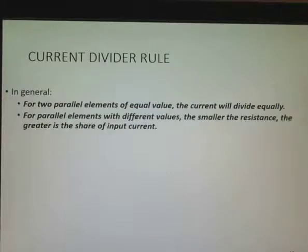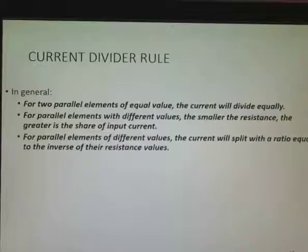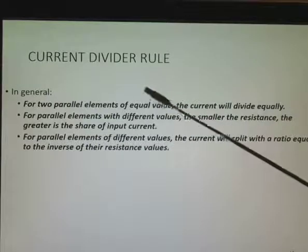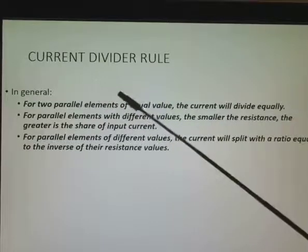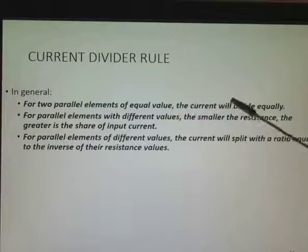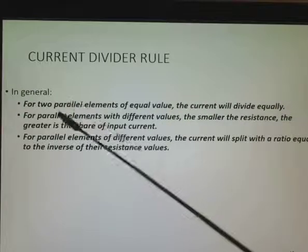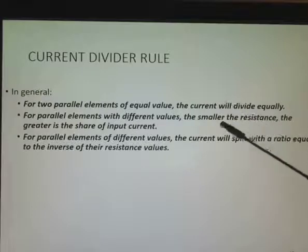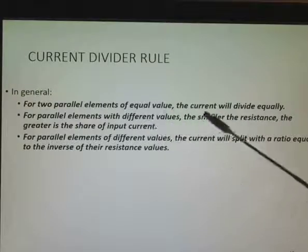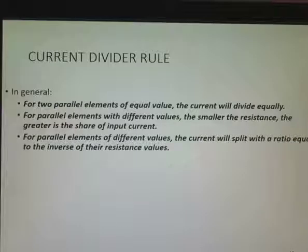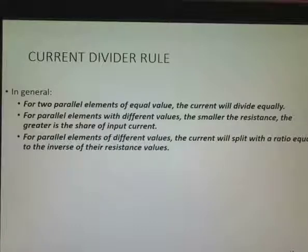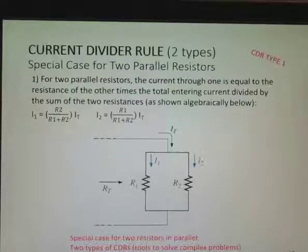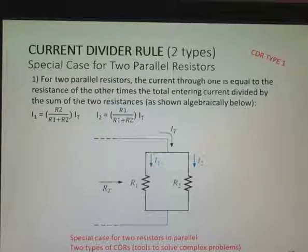Now we're going to look at the current divider rule. For two parallel elements of equal value, the current will divide equally. So if I have a parallel circuit with both of them have 2 ohms, the current will be the same in both of those paths. For parallel elements with different values, the smaller resistance will get the greater share of the input current because there's less resistance to current flow. And for parallel elements of different values, the current will split with a ratio equal to the inverse of their resistant values.